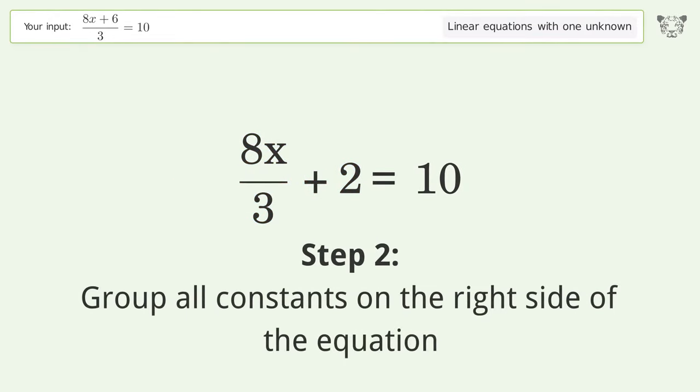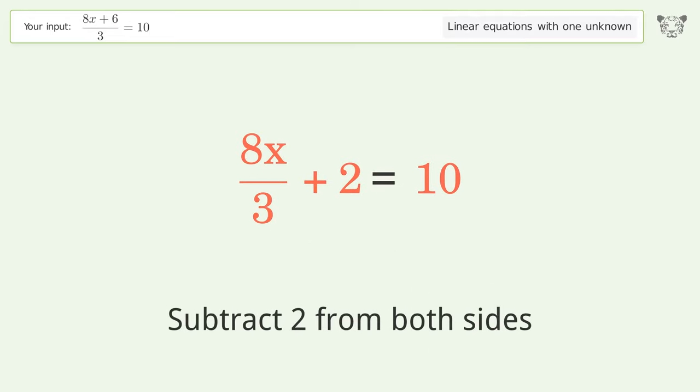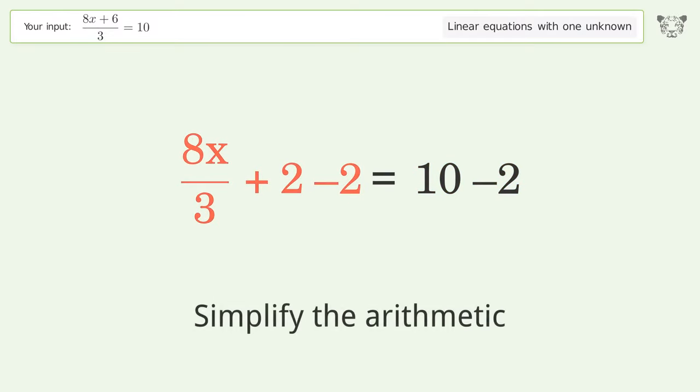Group all constants on the right side of the equation. Subtract 2 from both sides. Simplify the arithmetic.